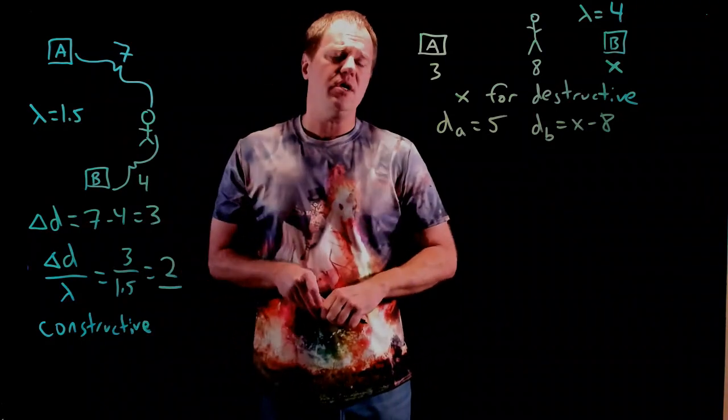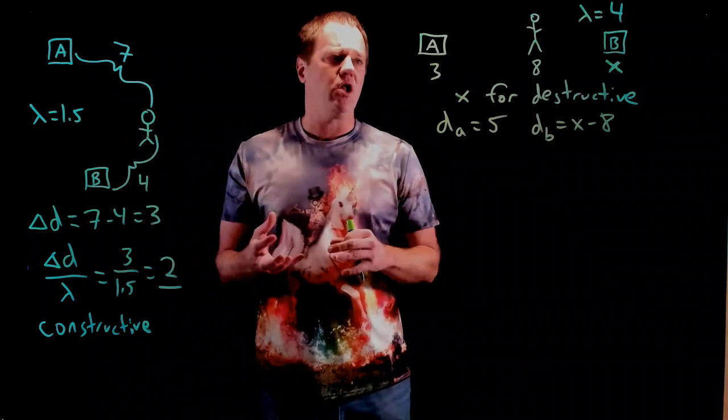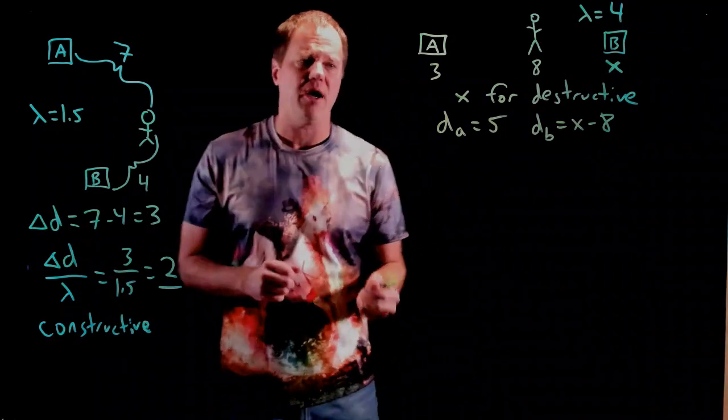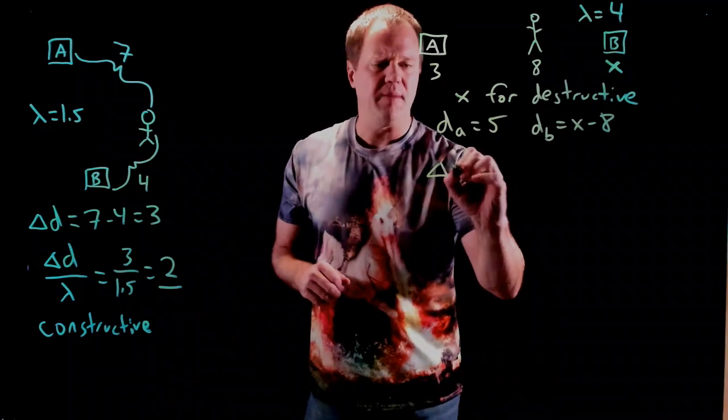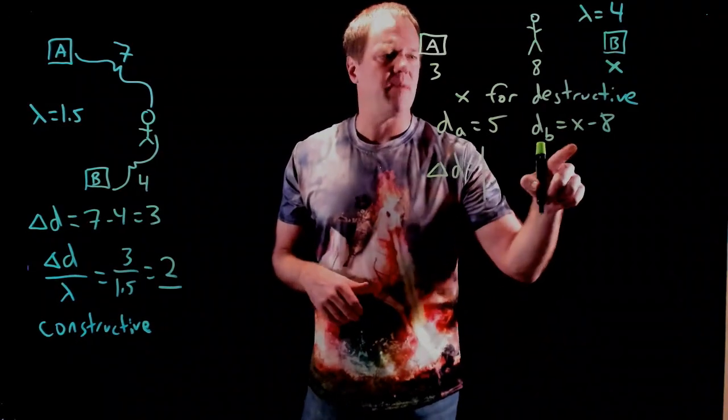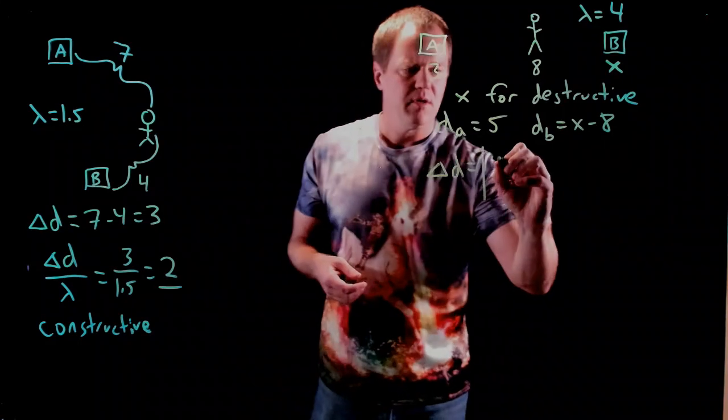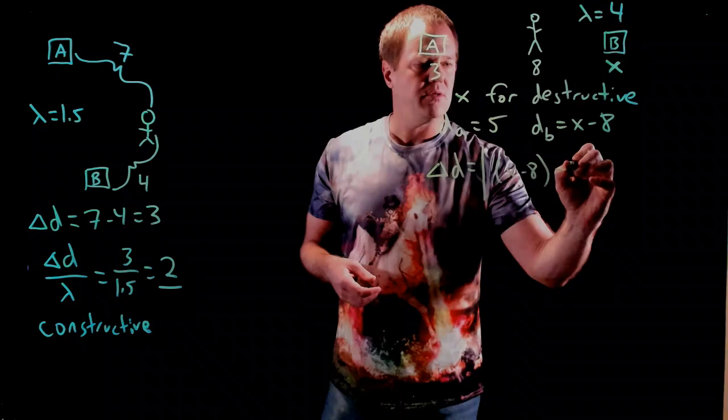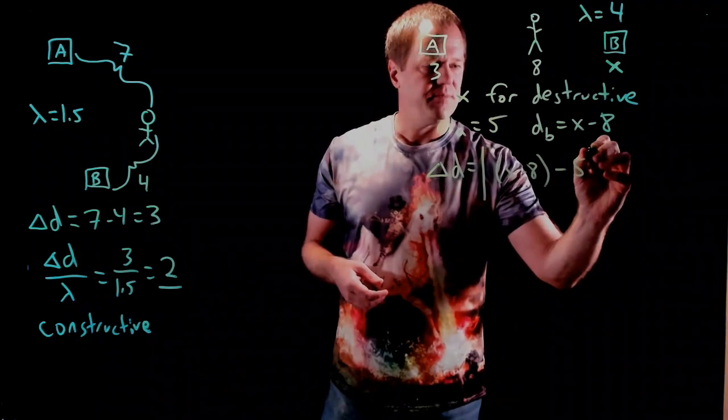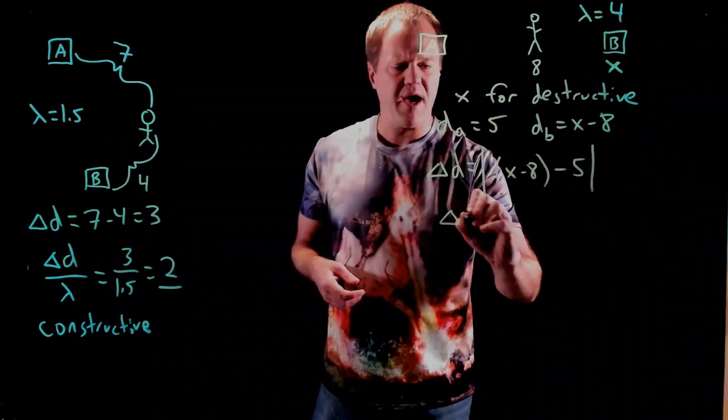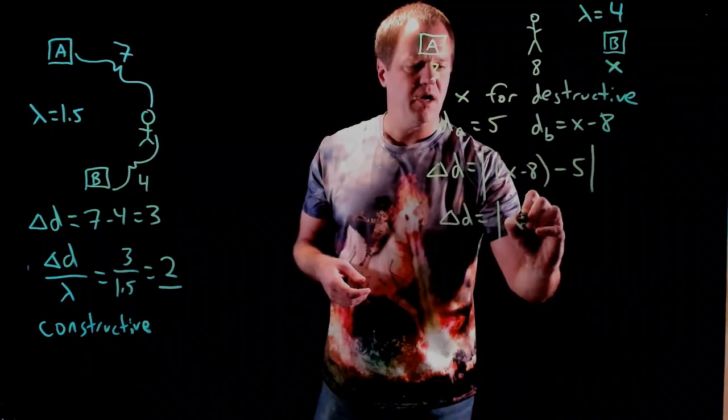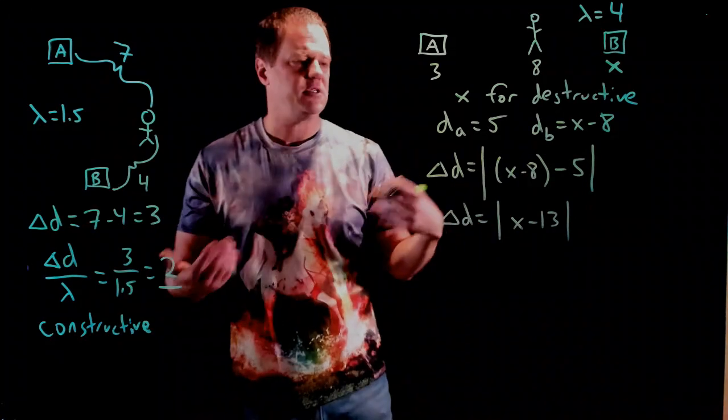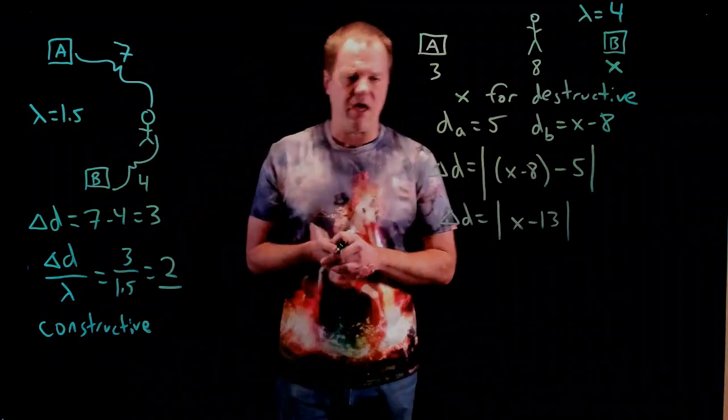Typically, what you want to do is take the bigger minus the smaller, but in this case, we actually don't know which one's bigger. So, we're going to have to put an absolute value sign around our answer. I'm just going to pick arbitrarily which one to put first. I'm going to put distance to B first. So, x minus 8, and then I'm going to subtract distance to A, and I end up with a path difference of the absolute value of x minus 13. If you did the reverse, you'd just get 13 minus x absolute value. That would be fine, too.